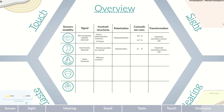Olfactory stimuli are converted into cellular depolarization via a G-protein-dependent signaling cascade. Depolarization is generated by the influx of sodium and calcium ions and the efflux of chloride ions. The signal is transmitted as an action potential to downstream neurons. When it comes to taste, flavors act as chemical signals on secondary sensory cells.